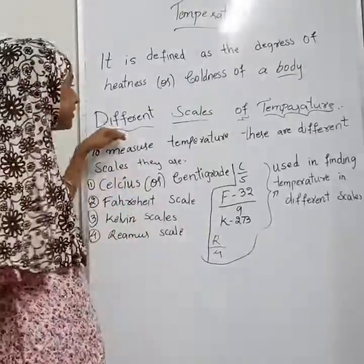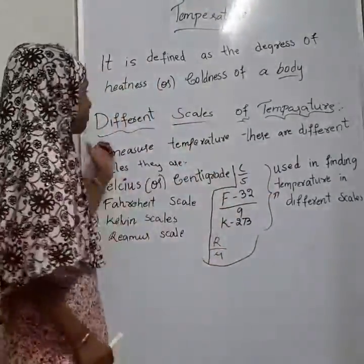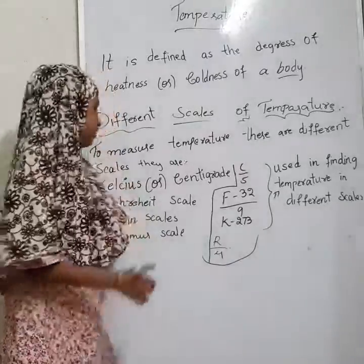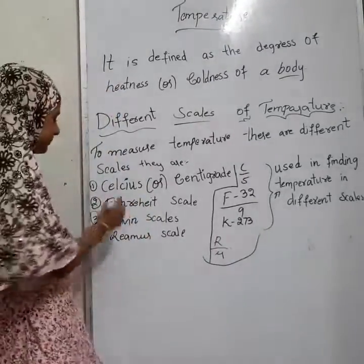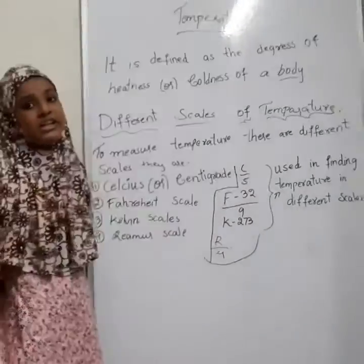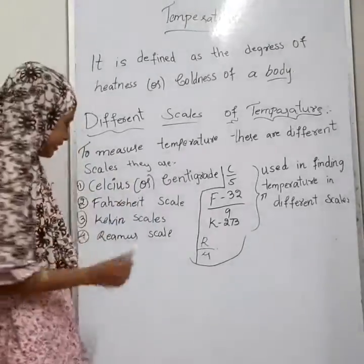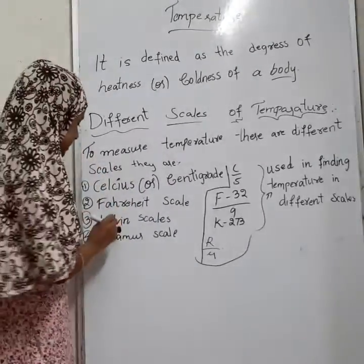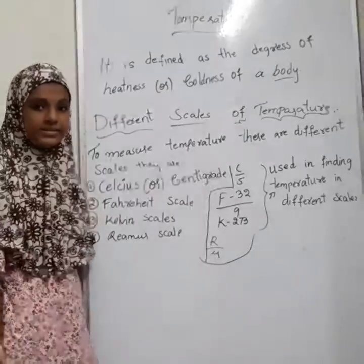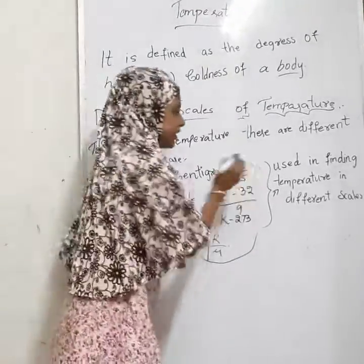Let us see the units of different scales. To measure temperature, there are different units or scales. The first one is Celsius or centigrade, then Fahrenheit scale, Kelvin scale, and Réaumur scale. And we have formulas for each of these.